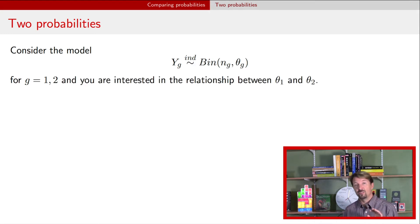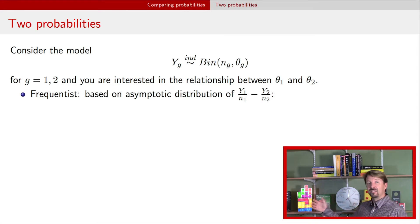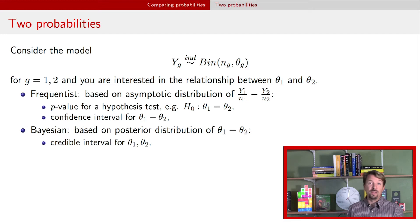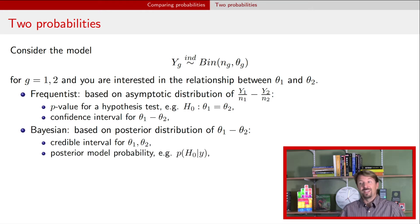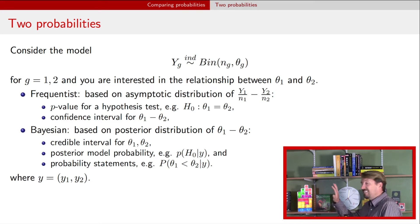Now we have these two different probabilities and you're interested in the relationship between theta 1 and theta 2. We can do similar things to what we did with a single probability, but things change a little. From a frequentist approach, it's based on the asymptotic sampling distribution for the difference. You can do p-values for a test of equality and a confidence interval for that difference. Going the Bayesian route, you can calculate a posterior distribution for that difference, credible intervals for each individually and for the difference, posterior model probabilities, and posterior probability statements about one parameter being less than another. The details and hypotheses change, but the mechanics stay pretty much the same.